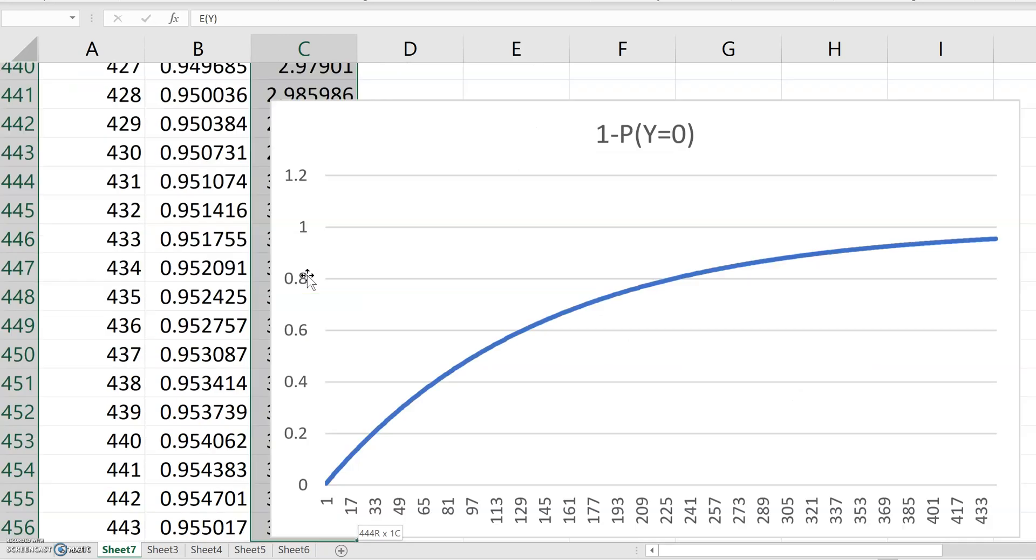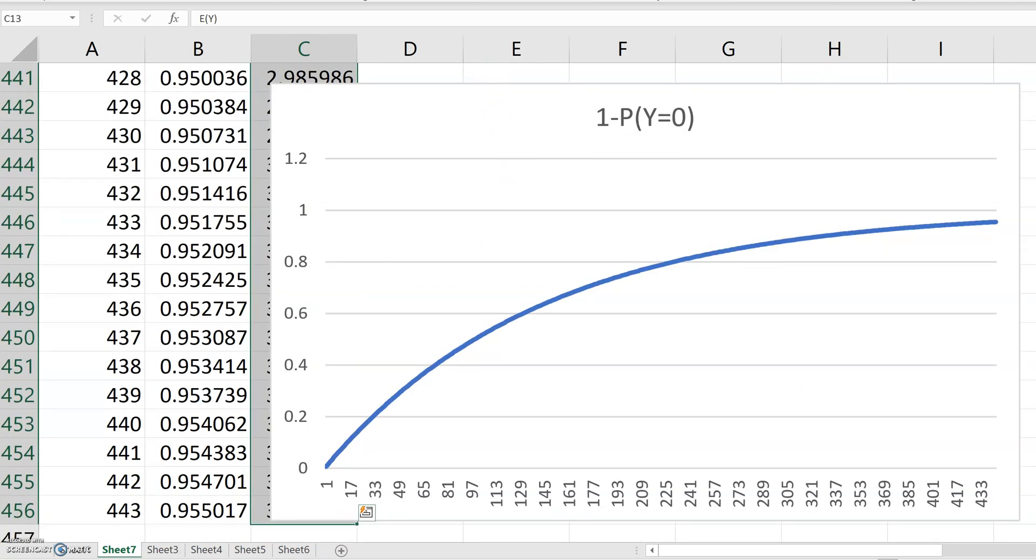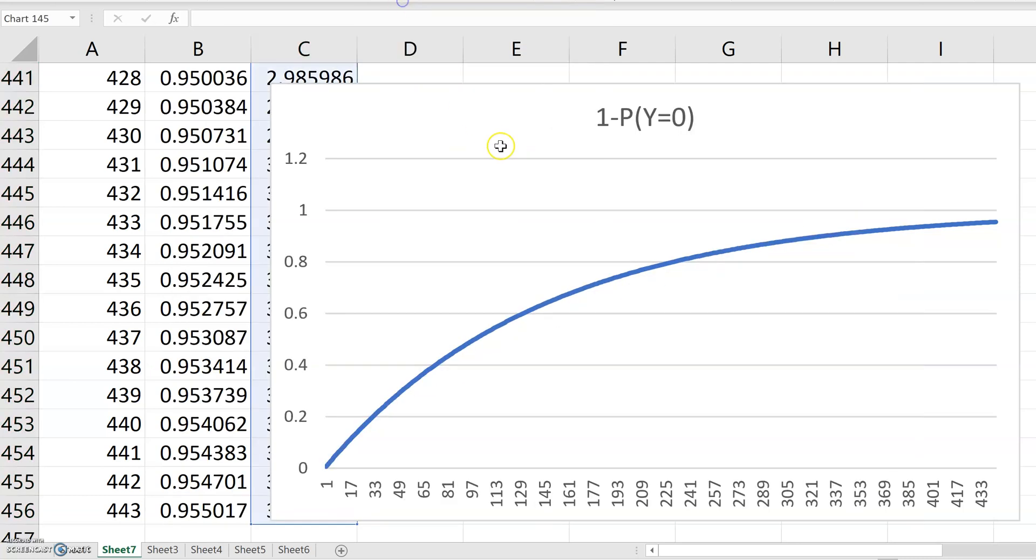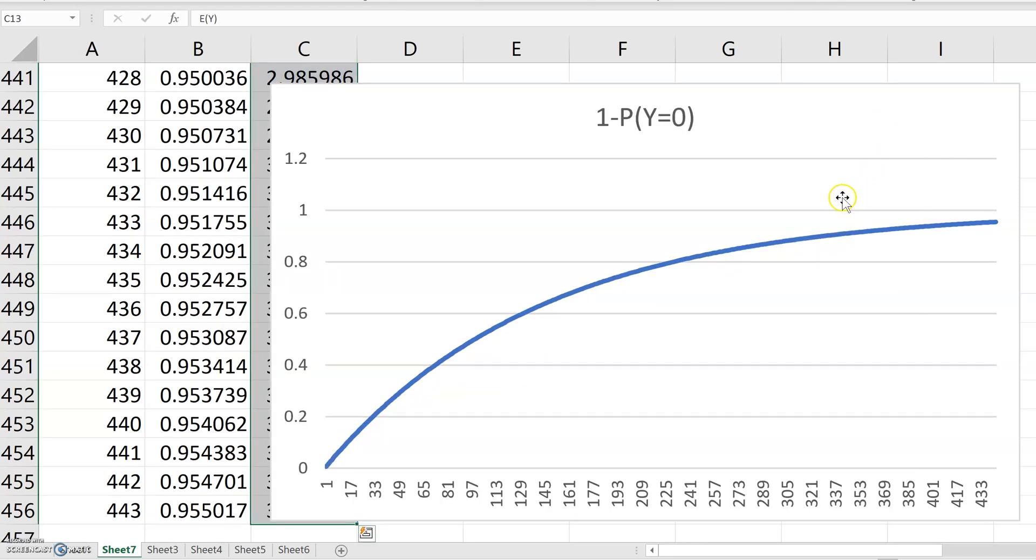But in any small sample, samples of 30 or fewer, there's actually not a great chance of there being an outlier. Of course, this expected value of Y series, this is just linear n times p, so it's just a straight line. The expected number of outliers, not many as n grows. Even a sample of 400 or something, we'd expect only three outliers if those observations are drawn from a normal.